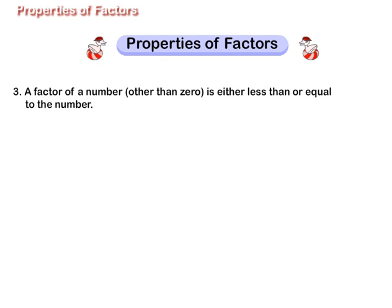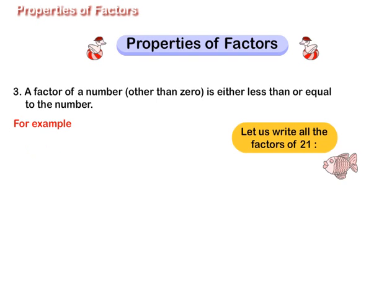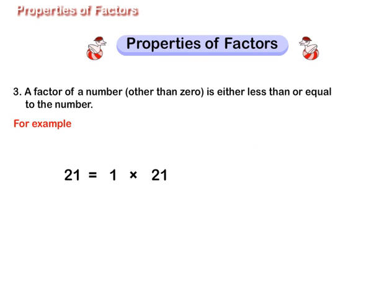Property 3: A factor of a number other than 0 is either less than or equal to the number. For example, let us write all the factors of 21. 21 is equal to 1 multiplied by 21. 21 is equal to 3 multiplied by 7.